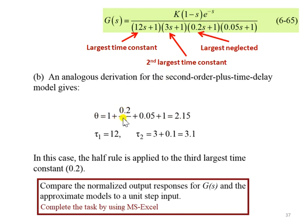which is 0.2 divided by 2, and then plus 0.05 from here, and then plus 1 from above here. Therefore, we have a total of 2.15 time delay.